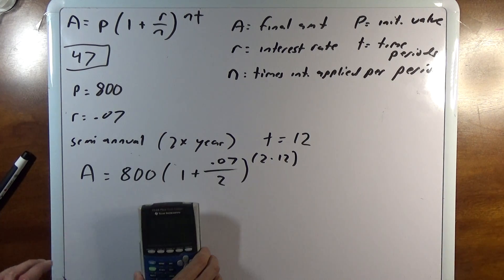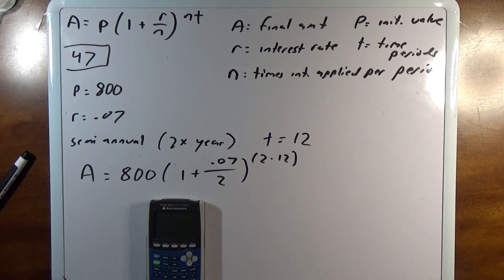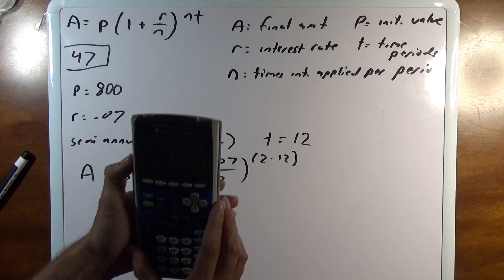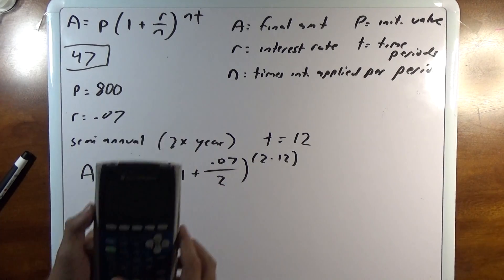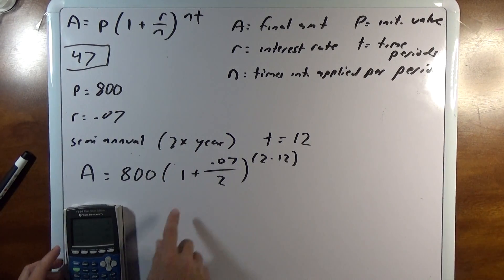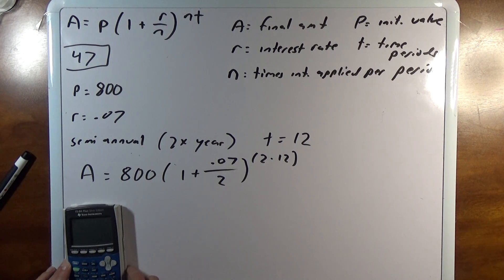If you have a graphing calculator, you can do this in one shot. What I'm going to do is start. I don't have a backlit one. I start here, so this is 1 plus 0.07 over 2.